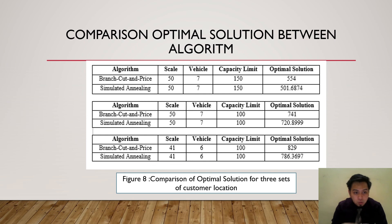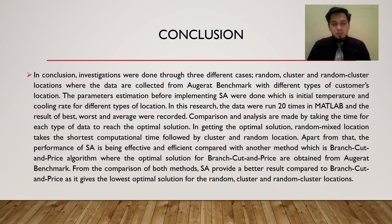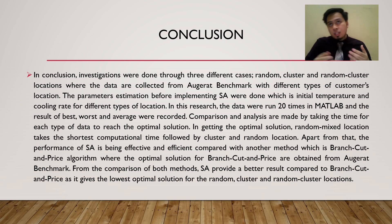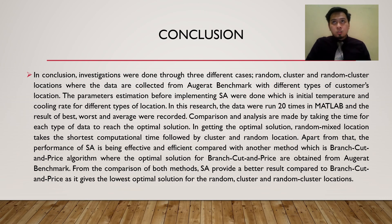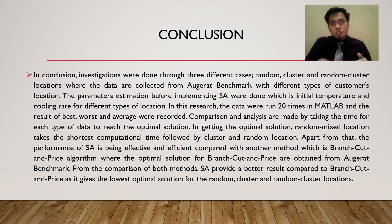Furthermore, the computational time of using the SA approach is reported to be faster in obtaining optimal solutions, as this method is a metaheuristic. In conclusion, using SA to solve CVRP is very effective and efficient, as all results are proven with evidence that optimal solutions were obtained outperforming algorithms such as Branch-Cut-and-Price. For recommendations, SA can be further extended in the future by comparing with other methods like Tabu Search, Genetic Algorithm, or exact solution branch algorithms. That's all from me, thank you.